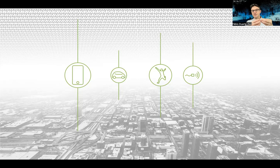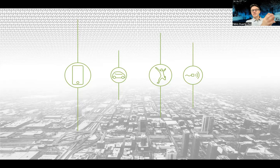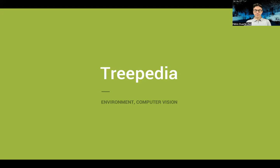Every time that we log on the internet or use a cell phone, we leave behind digital traces. Sometimes these digital traces are combined in huge repositories, and what we can do as researchers is to find new questions and new methodologies to answer them. On the other hand, sometimes we have a specific urban phenomenon to understand and we don't have available data, so we need to build and deploy sensors to gather this data and make sense of it.